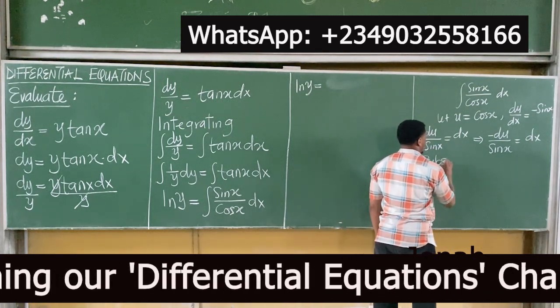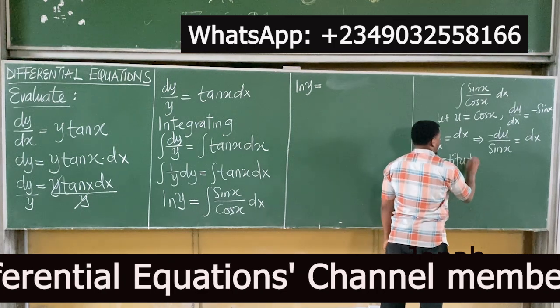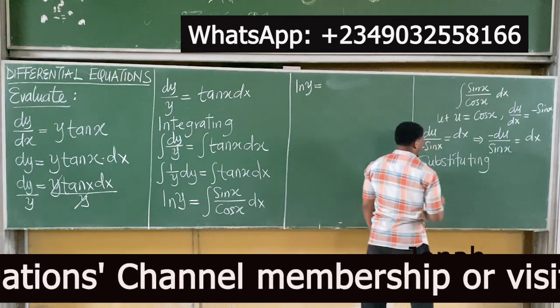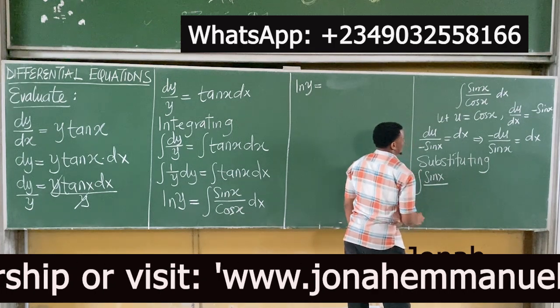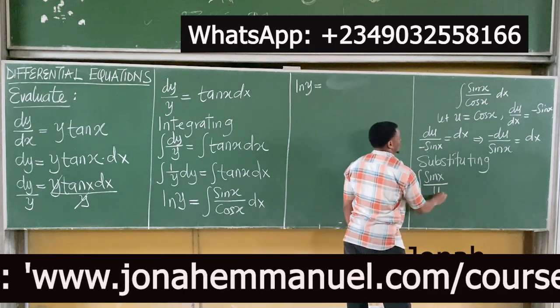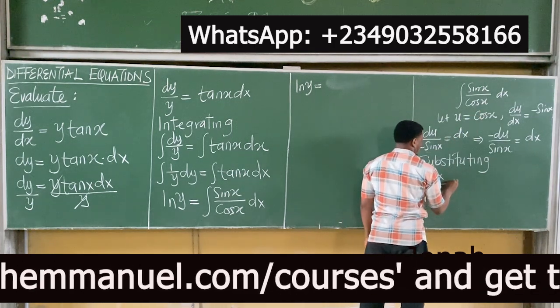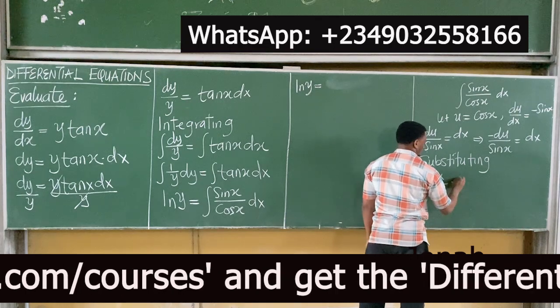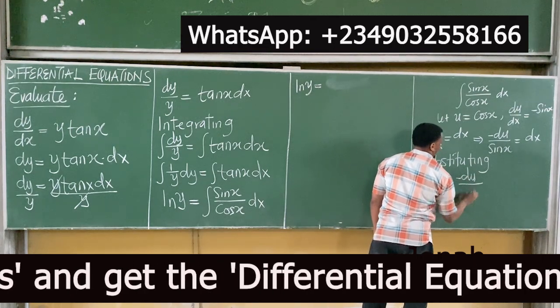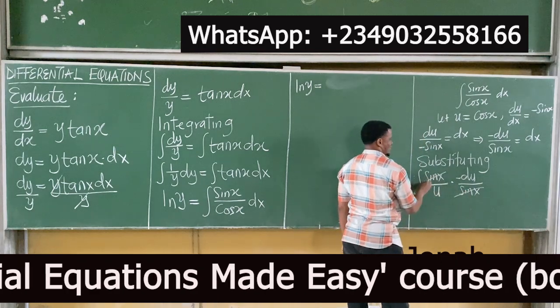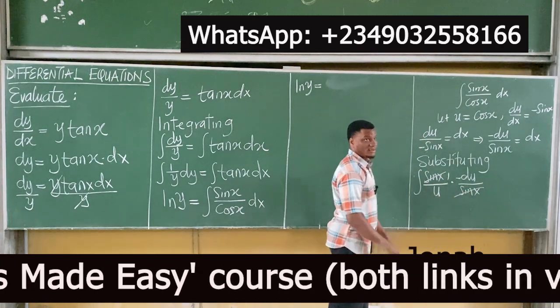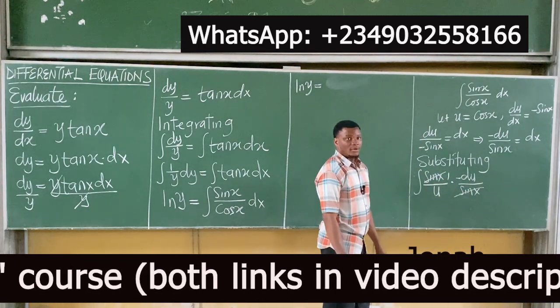Next up, substitute. You have integral of sin(x) all over u, that's cos(x), dot what's dx? -du/sin(x). See how this will cancel this. We have one here. Am I too fast?